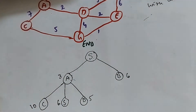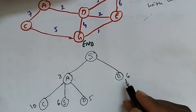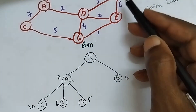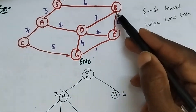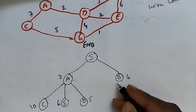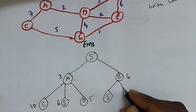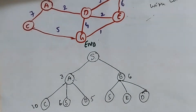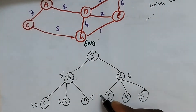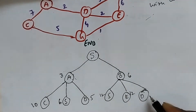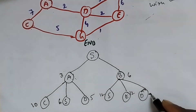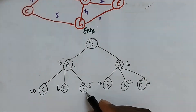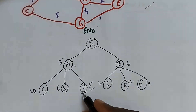Next we look at B. B has three possibilities: B to S (total 12), B to E (total 12), and B to D (cost 9). Among all sub-problems, the least cost is 5 (at node D via S→A→D), so we expand D.